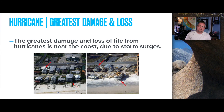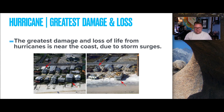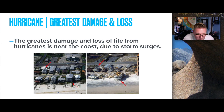The greatest damage and loss of life from hurricanes are found along the coast, specifically due to storm surges. A before-and-after photo from an unidentified hurricane shows homes on the left and almost nothing on the right — they're completely gone. The area was likely flooded in approximately 20 feet of water, completely destroying everything.